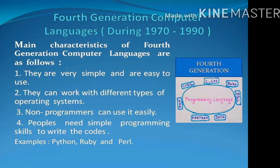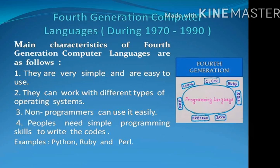Python, Ruby and Perl are the examples of 4th generation computer languages.